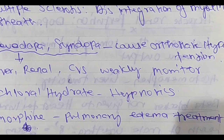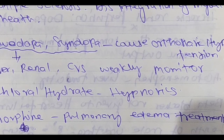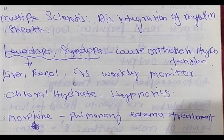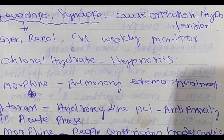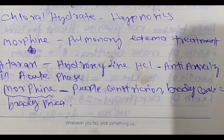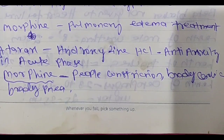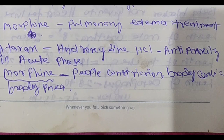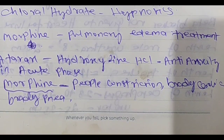Chloral hydrate is one of the hypnotics. Morphine is used for pulmonary edema treatment. Hydroxyzine hydrochloride — Atarax — is an anti-anxiety drug used in acute anxiety. Morphine causes pupil constriction, bradycardia, bradypnea, and reduced respiratory rate.